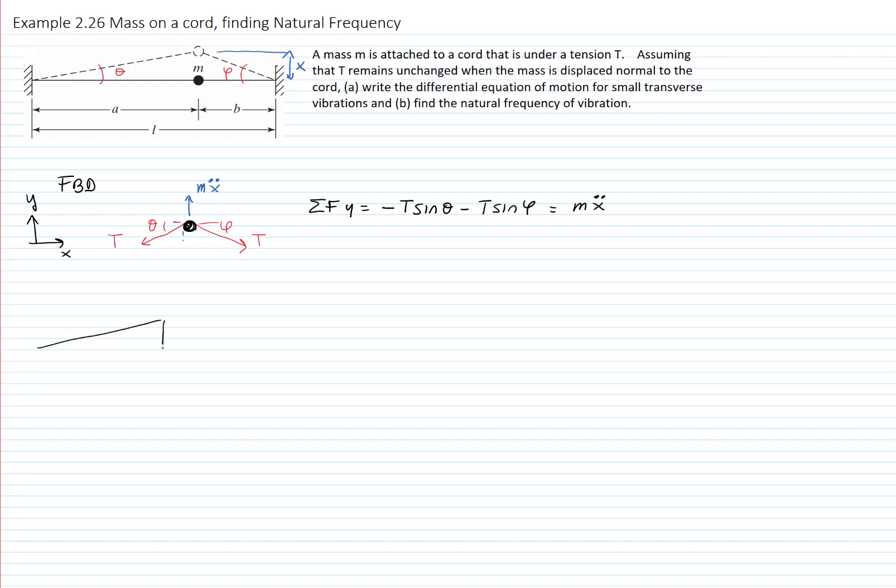And to find the relations between those two angles, let me draw this triangle right here of the cord. This is X, A, B, and this is theta and phi. You see that the tangent of theta is equal to X over A, and the tangent of phi is equal to X over B. For very small angles, we know that sine of theta is approximately equal to theta, and cosine of theta is approximated to 1.